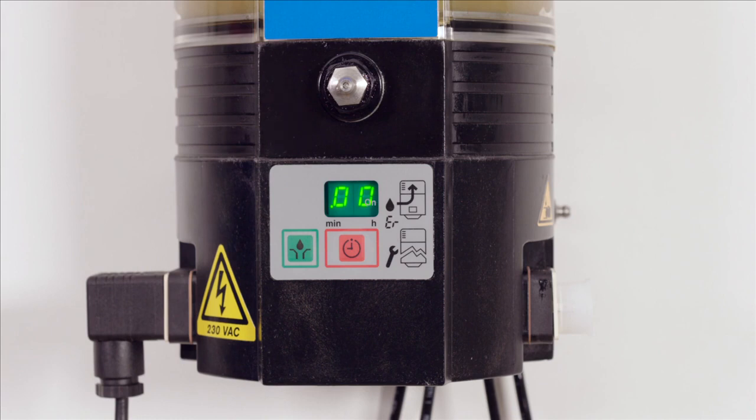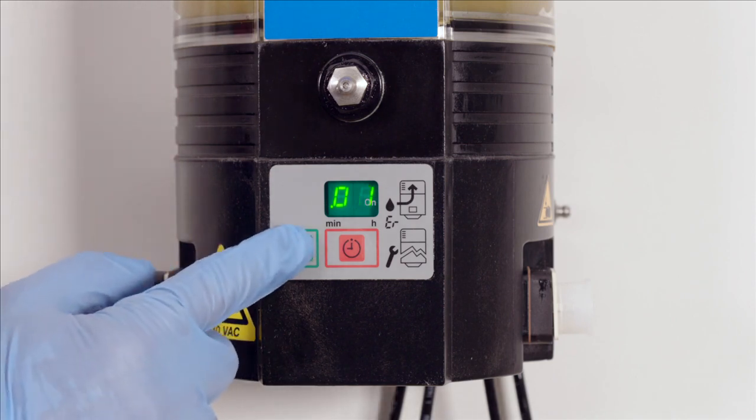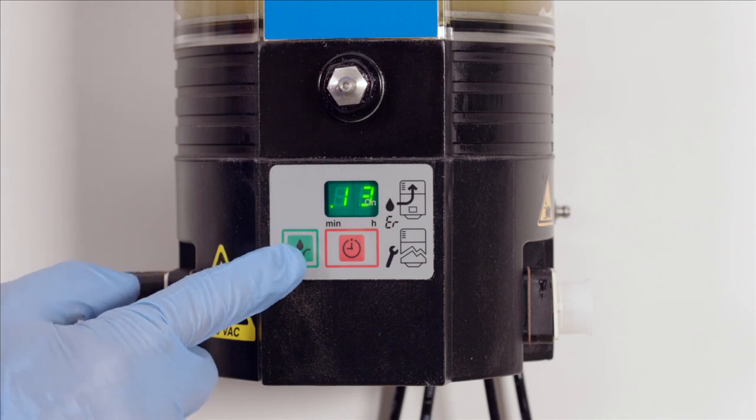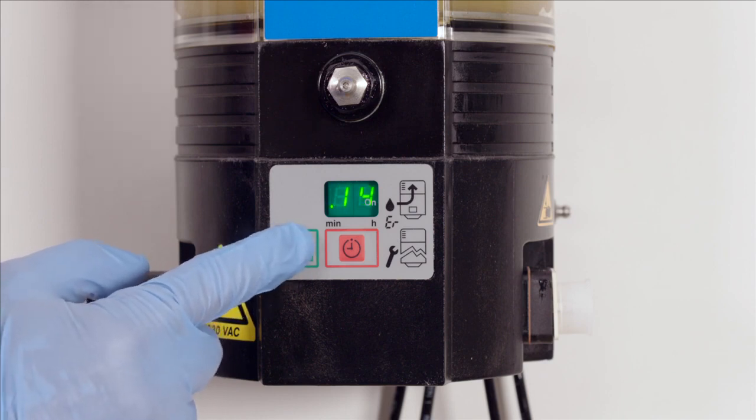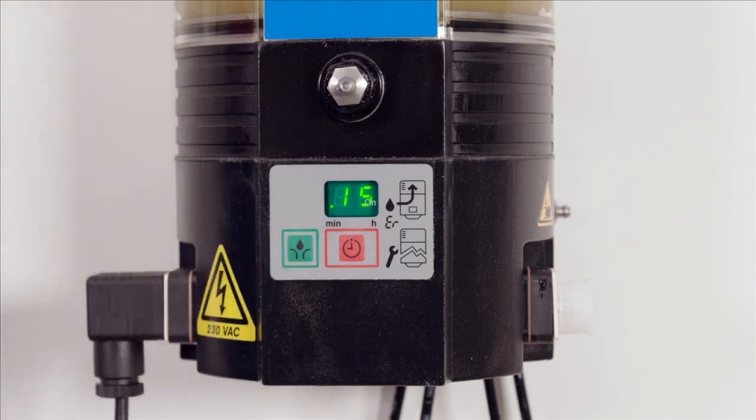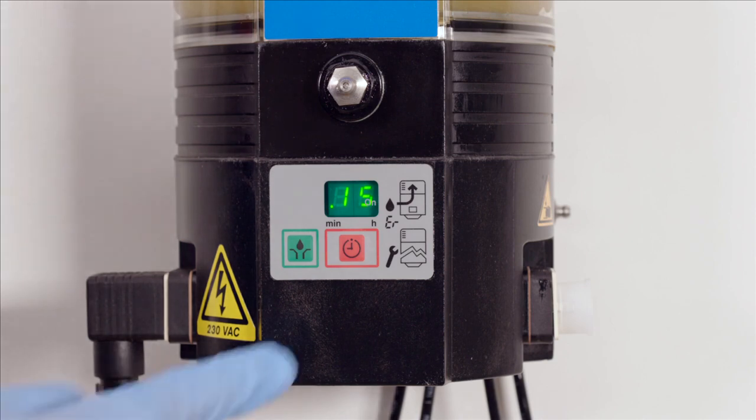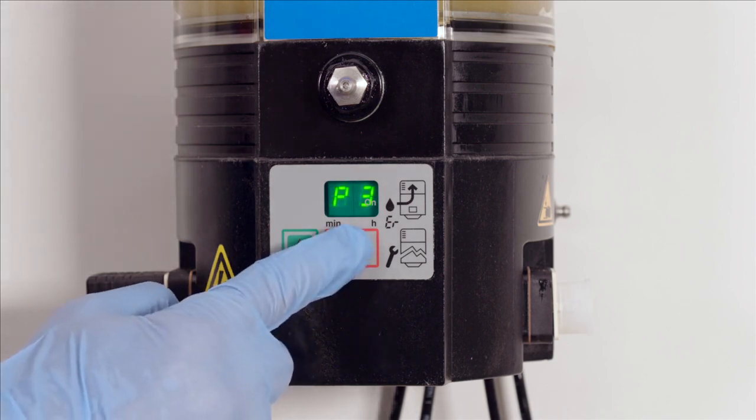Otherwise, it will default to the original setting. P2 should now be displayed and sets the minute value of the pause time. Press the green key to get the desired value. In this example, P1 is set to 10 and P2 is set to 15, which will generate a pause of 10 hours and 15 minutes. Press the red key to get to P3.